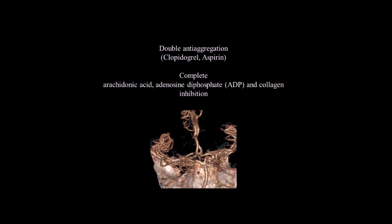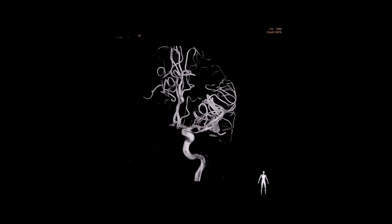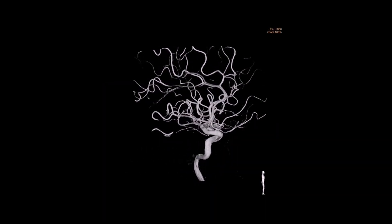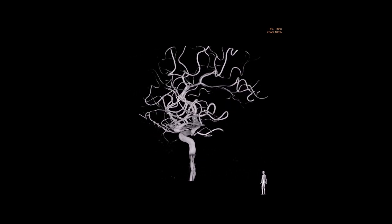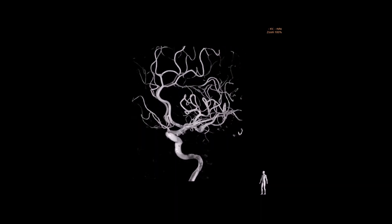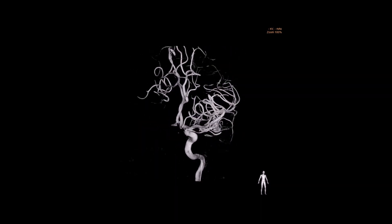After double anti-aggregation, blood assays showed complete arachidonic acid, ADP, and collagen inhibition. Basal rotational 3D angiography confirmed the aneurysm characteristics.